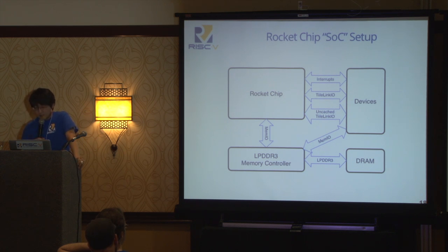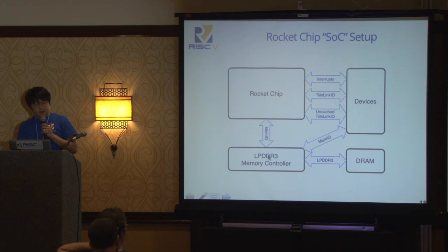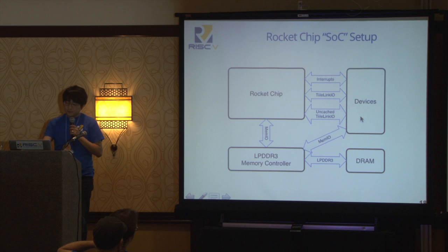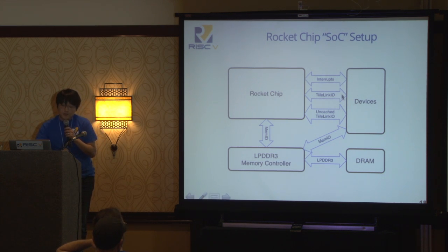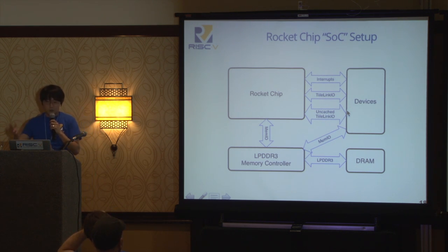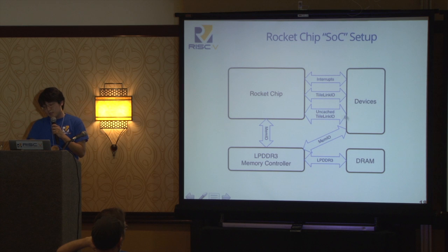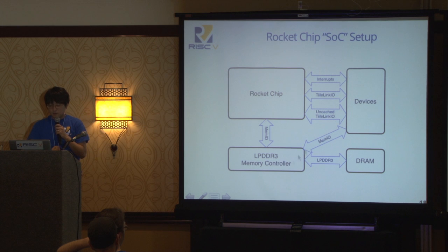For a real rocket chip SOC setup, you would terminate the mem-IO to an LPDDR3 memory controller with an LPDDR3 interface to DRAM. You would have actual devices on the SOC with interrupt lines, making devices talk TileLink-IO or uncached TileLink-IO depending on whether they need to hook into the cache-coherent memory system. If the device has a cache, it needs to talk TileLink-IO; if not, uncached TileLink-IO. For devices that don't need cache coherency, they can talk mem-IO directly to the memory controller.